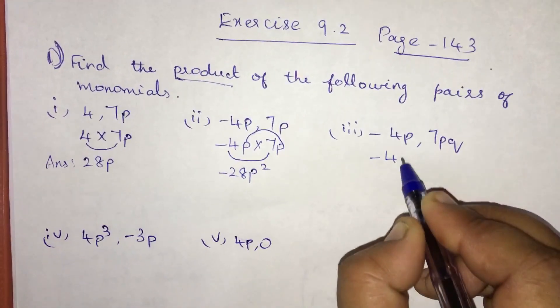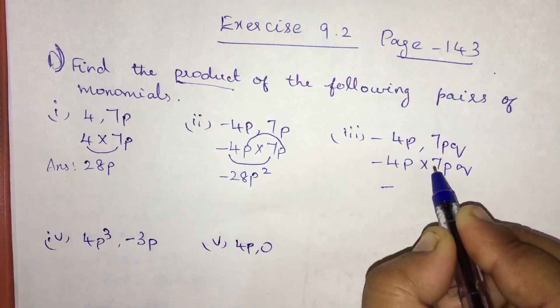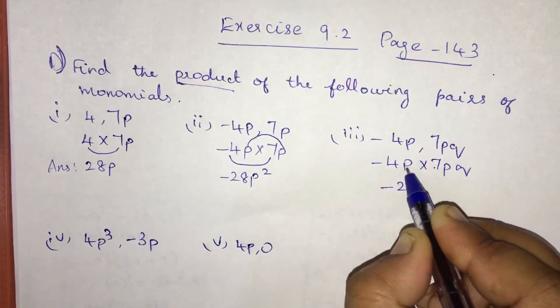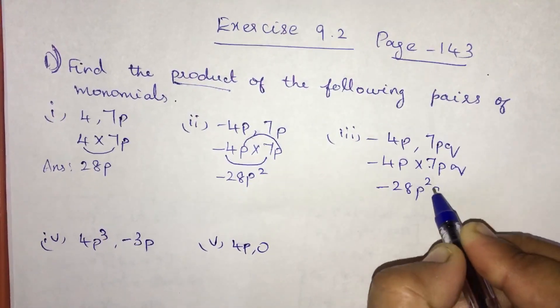Here it is minus 4p into 7p cube. It is minus 4 into 7, minus 28, p into p into q. So it is p square q.